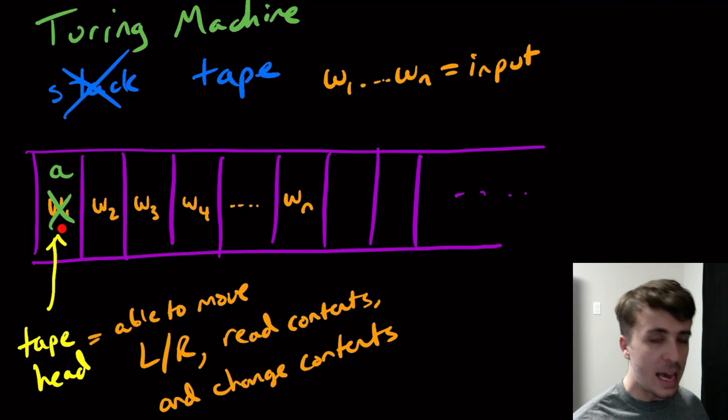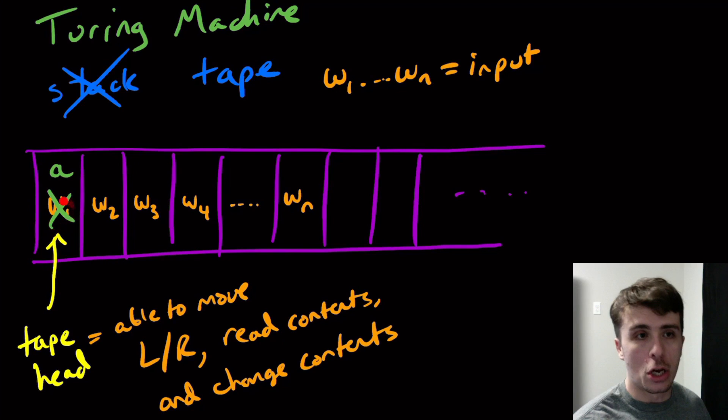It's not like a DFA where we can only move right and therefore can't go back. But even if we could go back, we couldn't change the contents of the cell. With a Turing machine, you're allowed to change the contents of the cell.